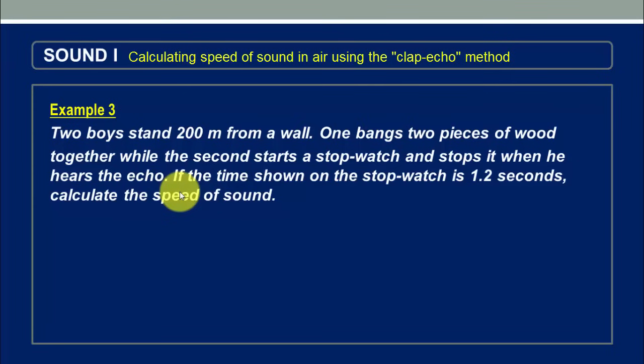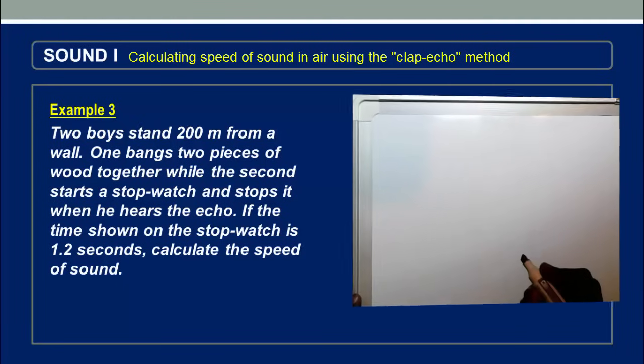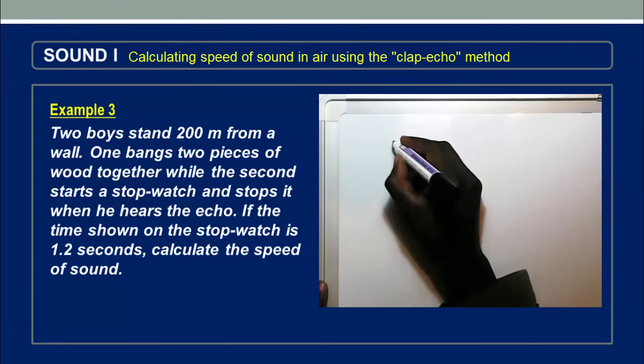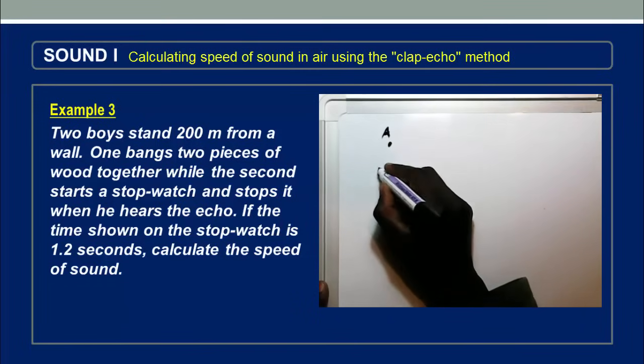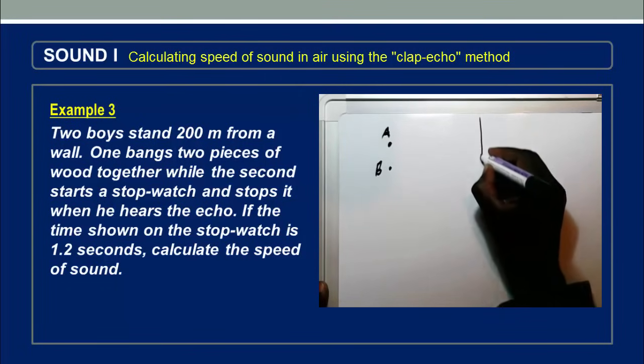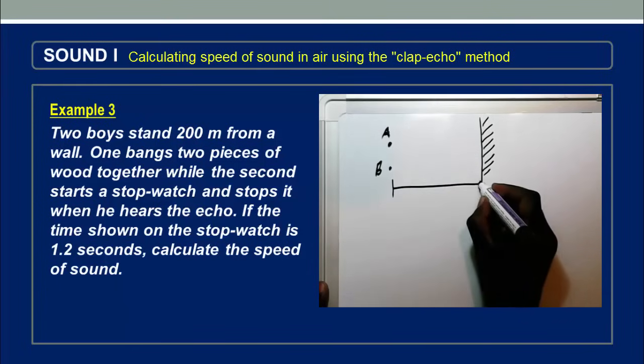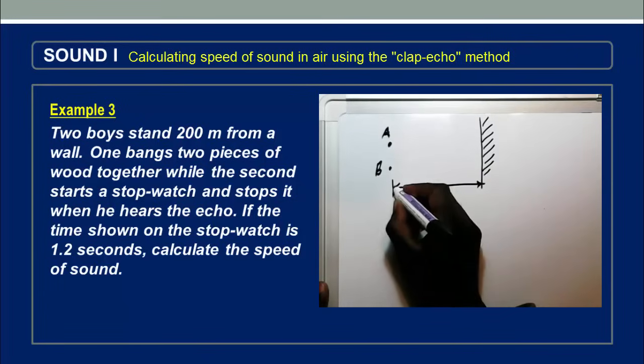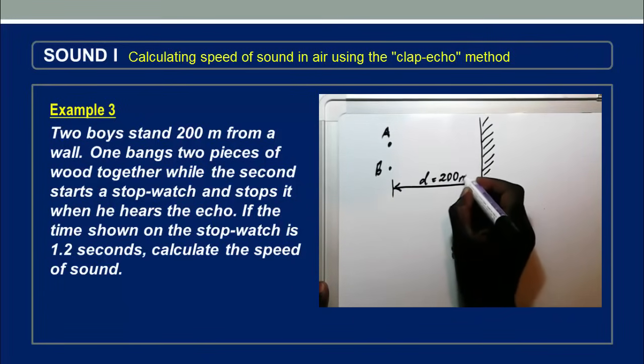Now let's see how we solve this question. Let's start by putting this information on a diagram. So let's say this is the first boy, let's call that boy A. Then the second one, B, is over here. And the wall is somewhere around here. This is the wall. And the distance between where they are standing and the wall is 200 meters. You can see this is D, 200 meters.